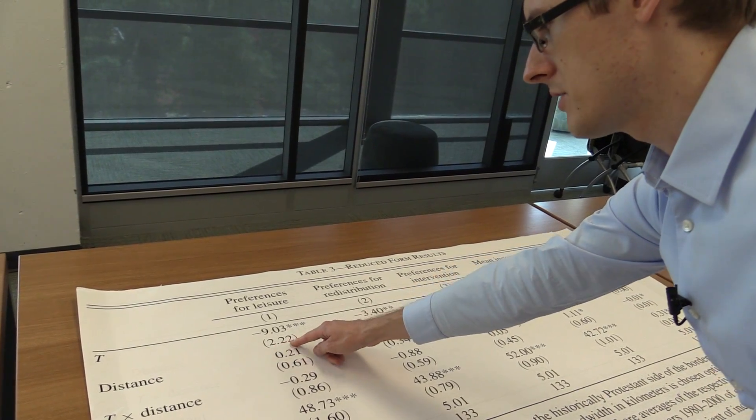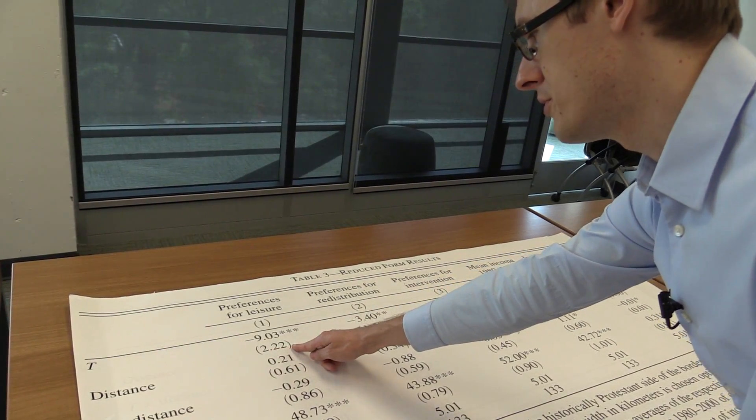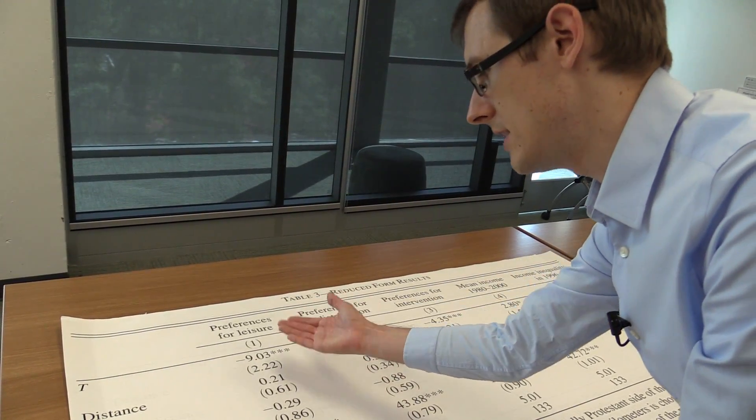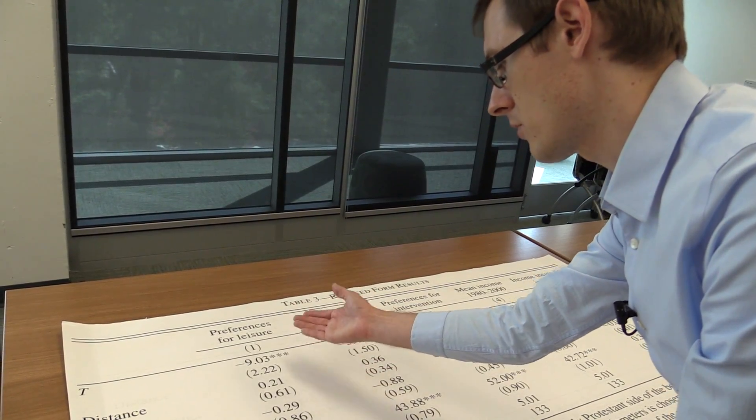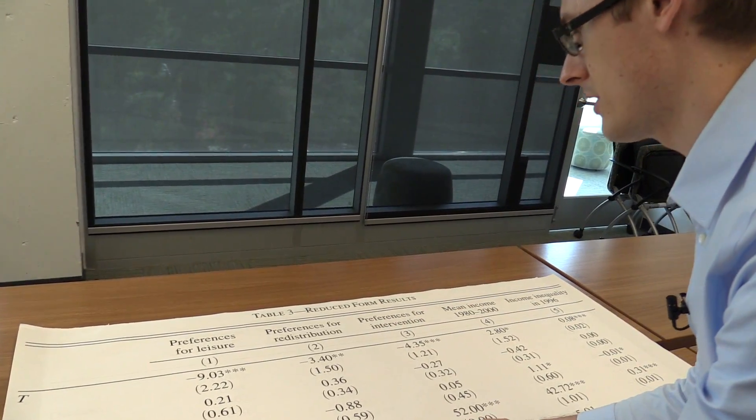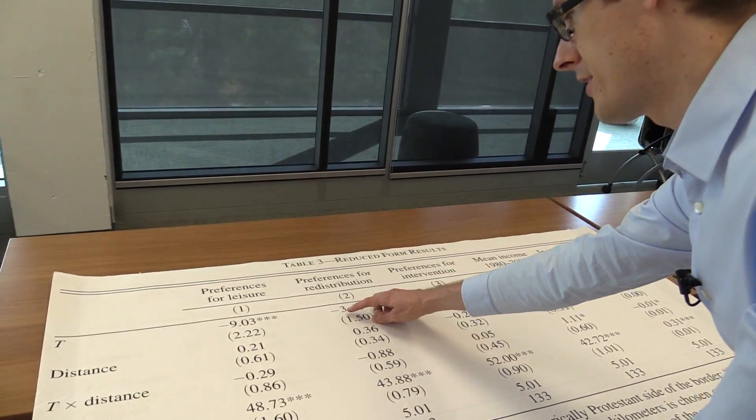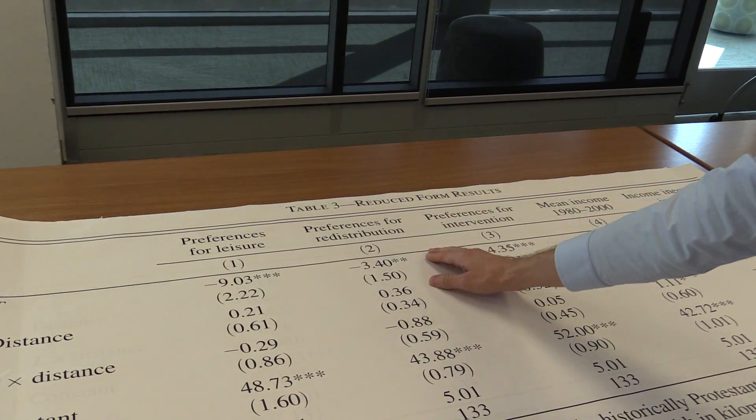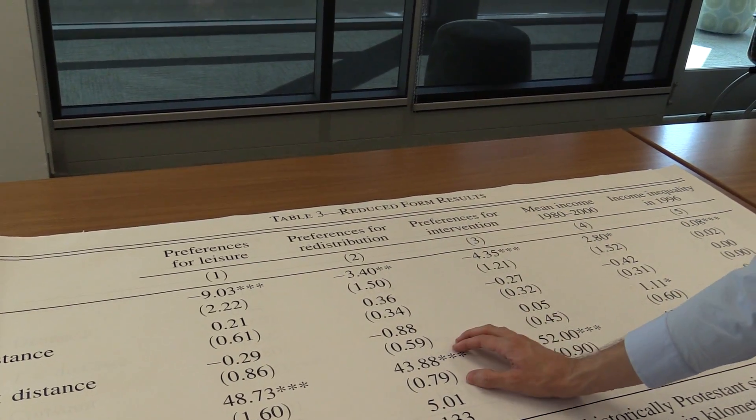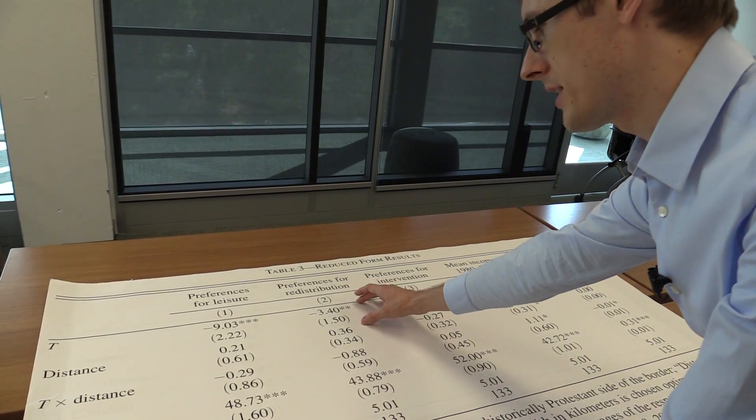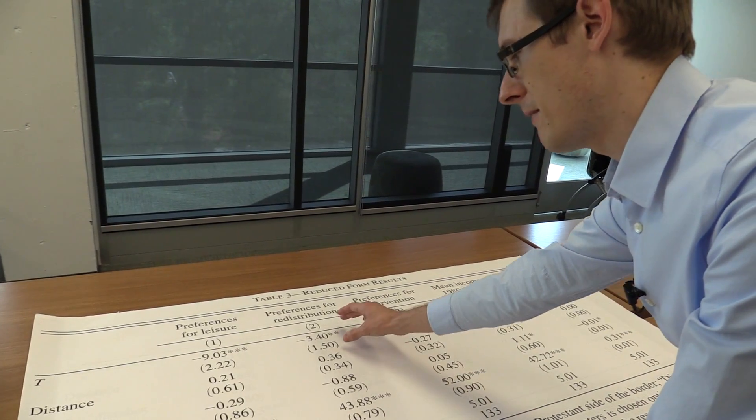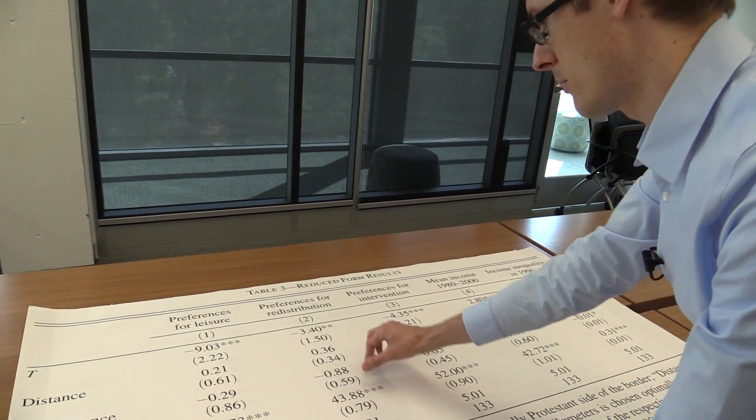And here we see the standard errors are in parentheses, 2.22, and this is a highly statistically significant effect. So this is not just due to random sampling noise. It's an actual causal effect. Over here in column two, we change the outcome variable, do the same regression analysis, and we find the causal effect of being minus 3.4. That's also roughly what we saw in the table form, or sorry, in the figure. And for Catholics it was 43%, and then for Protestants the effect was minus 3.4. So the overall preference was about 40% for Protestants, just this number minus that.